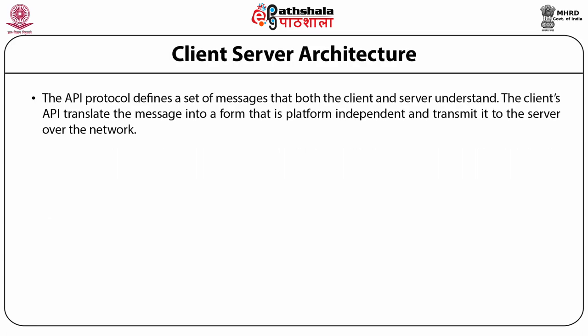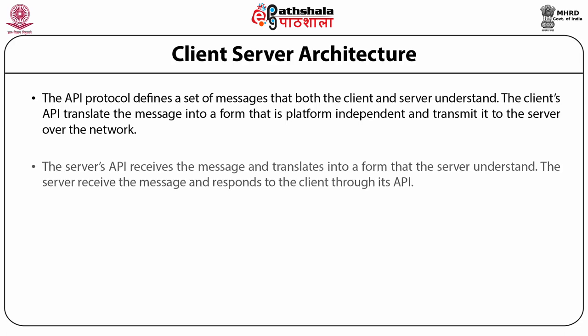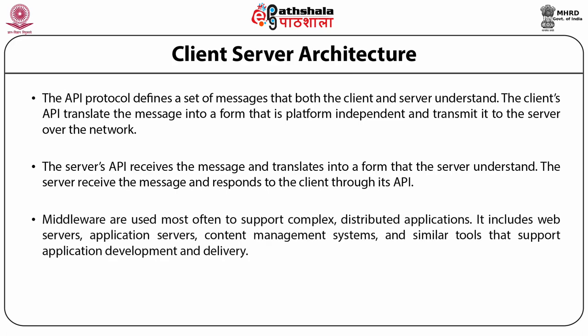The API protocol defines a set of messages that both the client and server understand. The client's API translates the message into a form that is platform independent and transmits it to the server over the network. The server's API receives the messages and translates them into a form that the server can understand. The server receives the messages and responds to the client through its API. Middleware is used most often to support complex distributed applications.